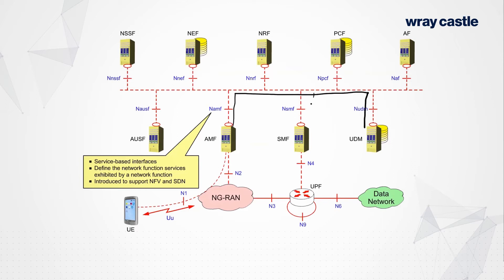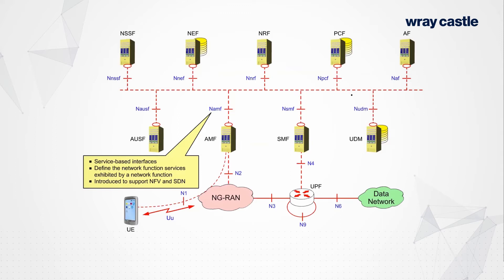The SMF is also connected to the UDM via the bus on an N10 interface, and so on. You could map the reference point architectures onto this picture, but that's somewhat missing the point. The way information is exchanged between these network functions is very much like the internet — internet clients and servers exchanging information. The way your web browser interacts with a web server is largely on the basis of HTTP/2.